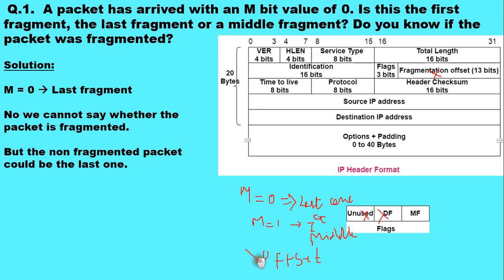But we are not given this offset value in this numerical, and M bit is not equal to 1 in this numerical. M bit is equal to 0, so obviously it is the last fragment. And we cannot say anything about whether the packet is fragmented because we are not provided with the don't fragment bit value and also we are not provided with the offset field value.